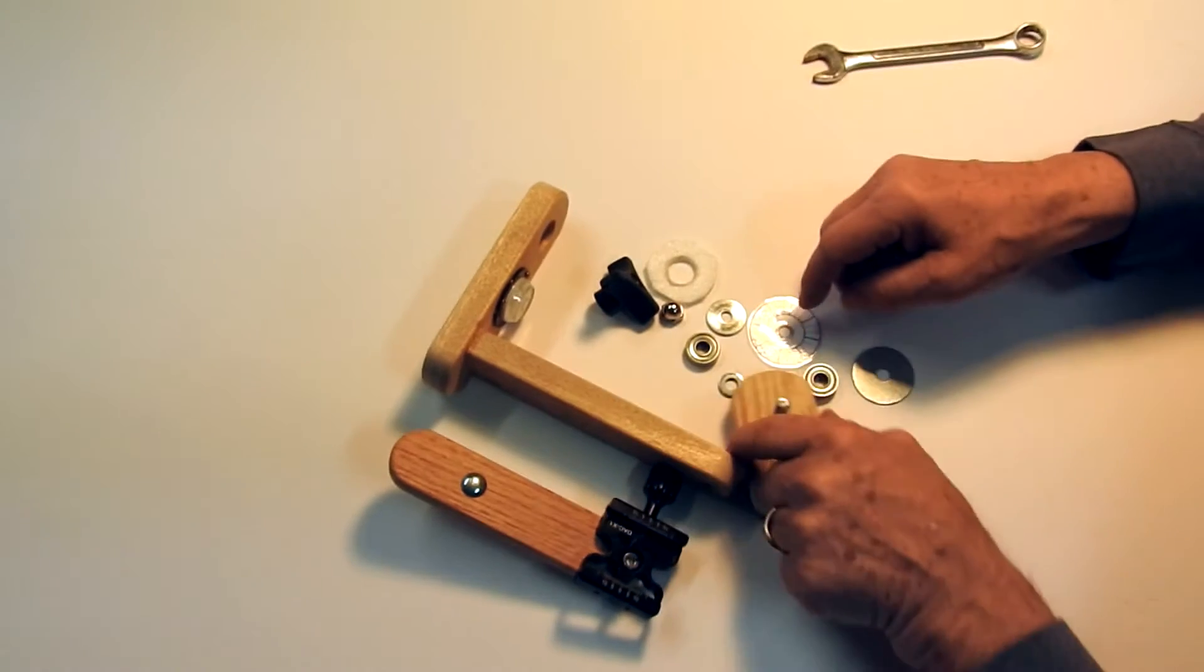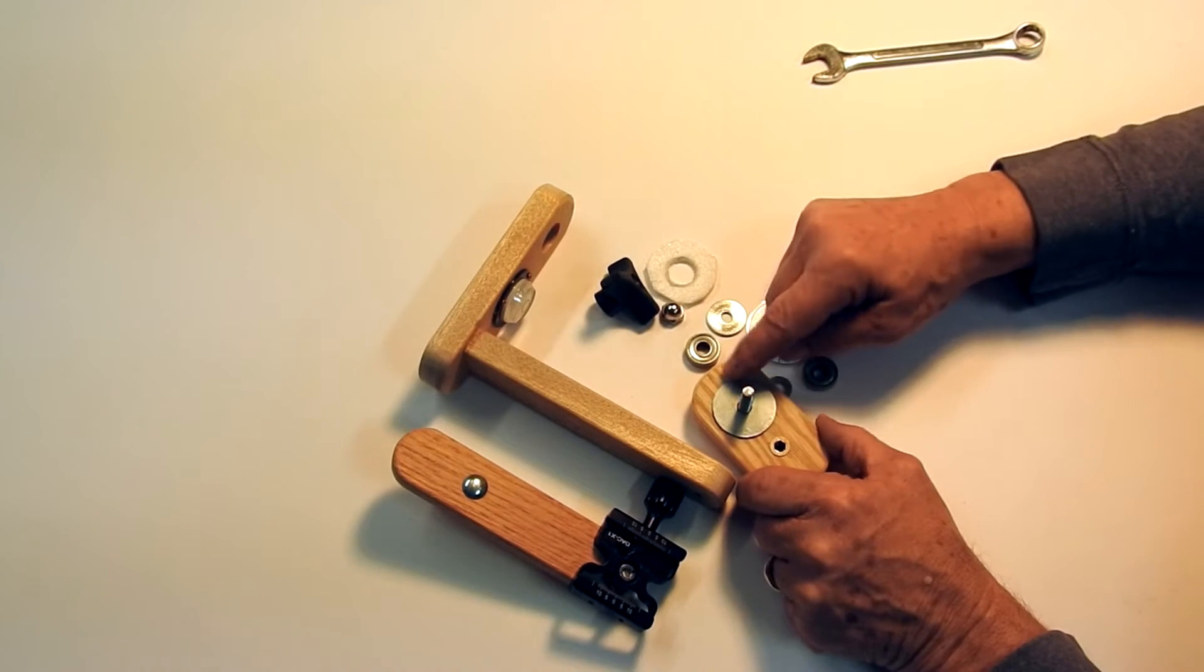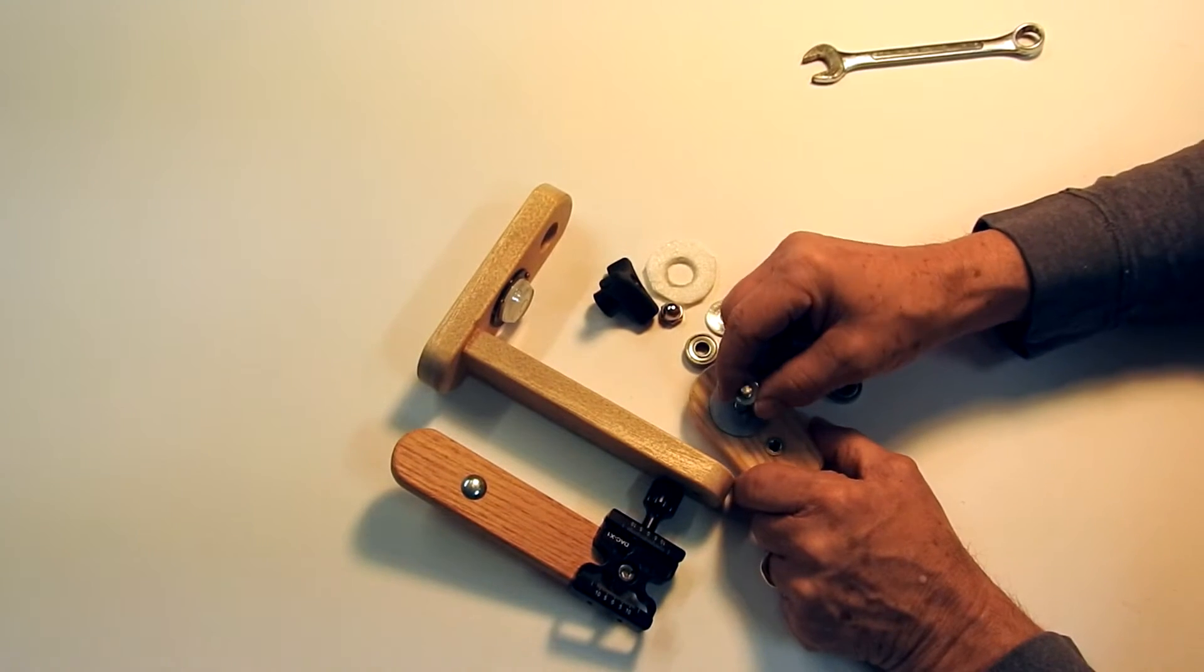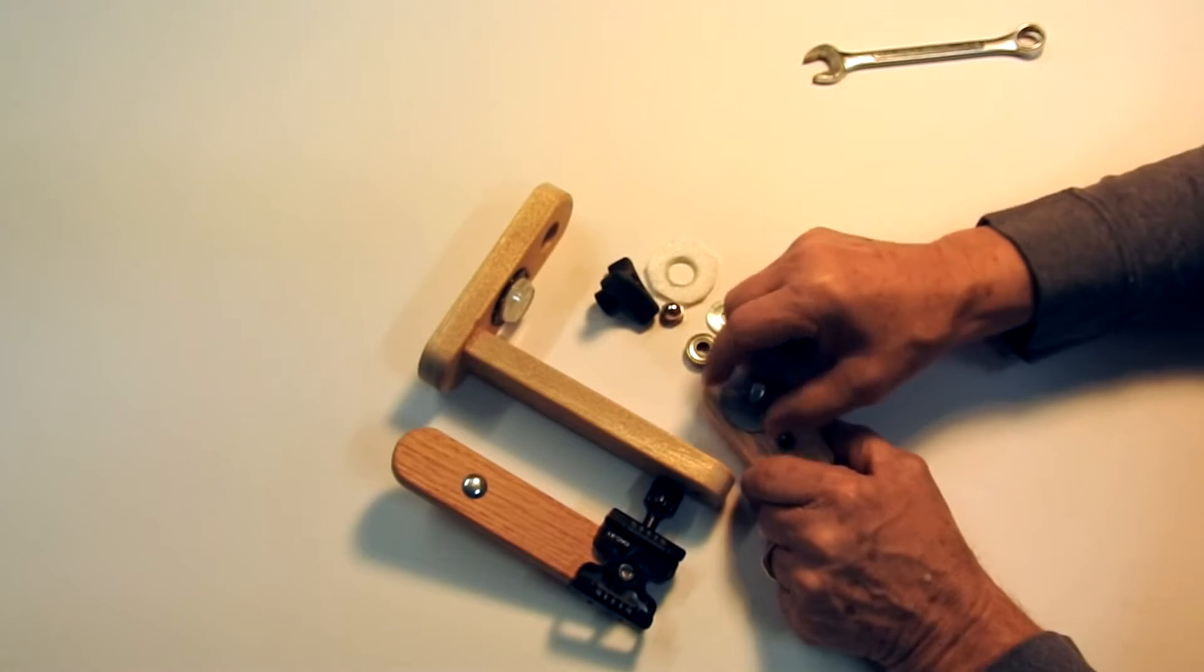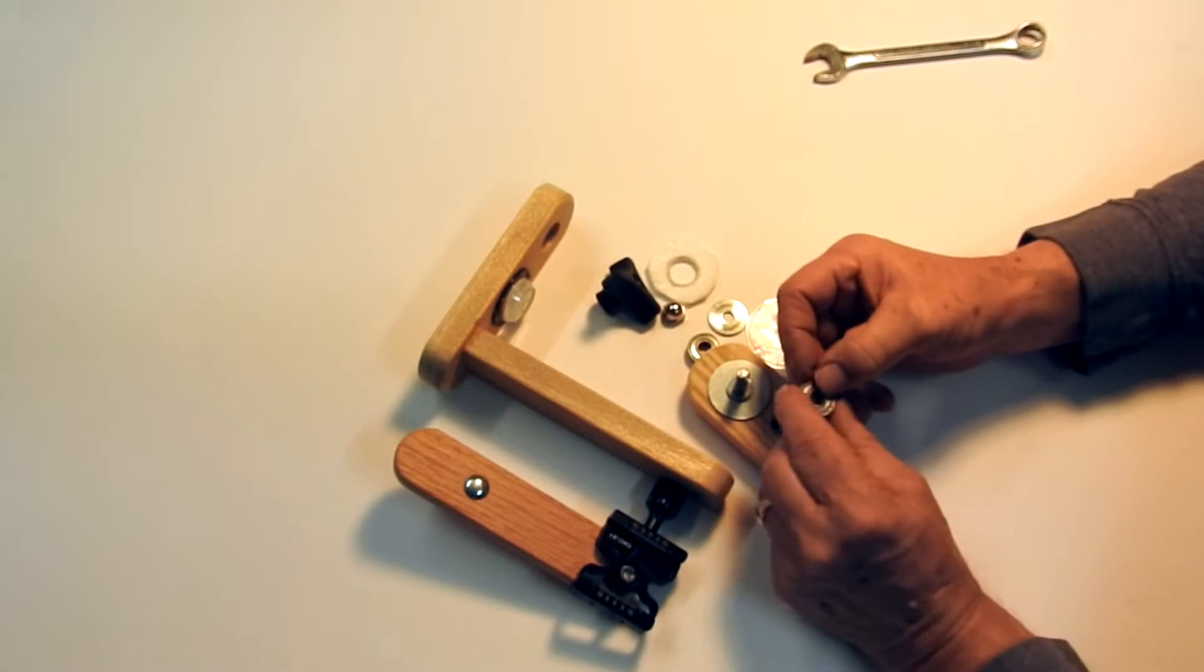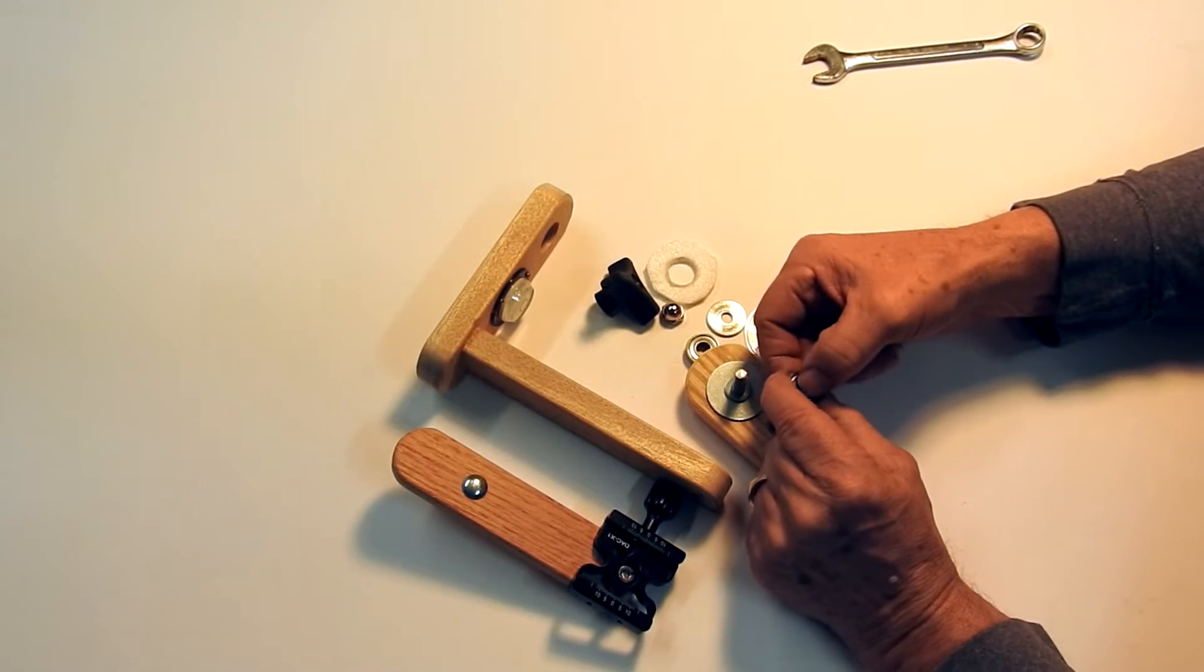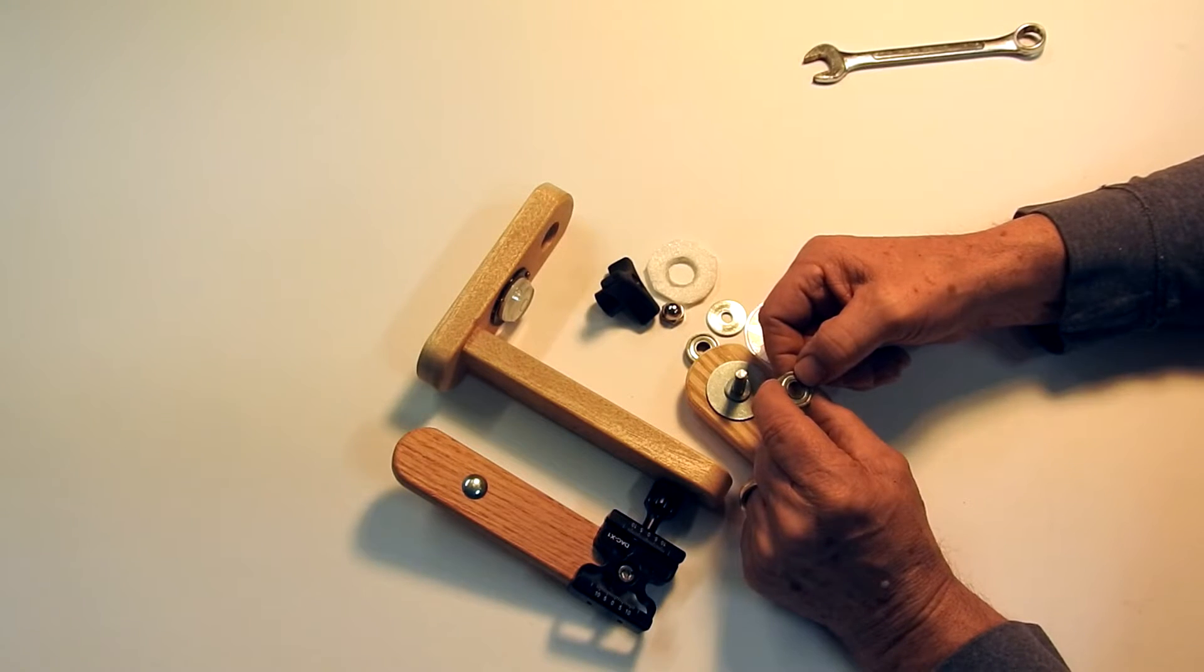When we're assembling this we put on a fender washer first and that helps keep the wood from denting. Then we put on a 5/16 inch washer and these washers are actually quarter inch washers that have been drilled out to 5/16. We did that so that the inner race of this bearing rests on that washer and that way the bearing center race turns freely when we're rotating this around the horizontal axis.